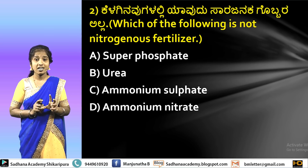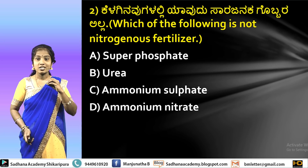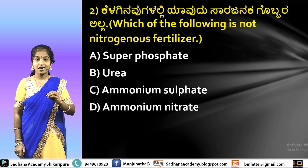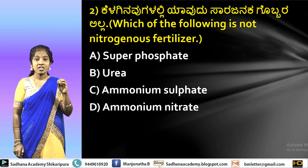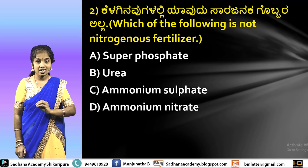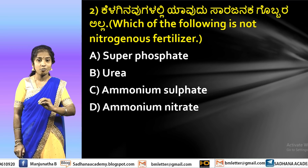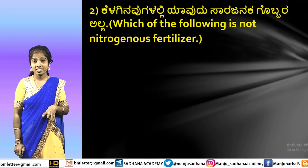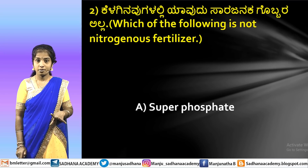Next to ammonium sulphate and ammonium nitrate — so the one that is not a nitrogenous fertilizer here is superphosphate. Superphosphate is a chemically manufactured substance. It is not a nitrogenous or nitrogen-based fertilizer. So the right answer is option A — superphosphate.